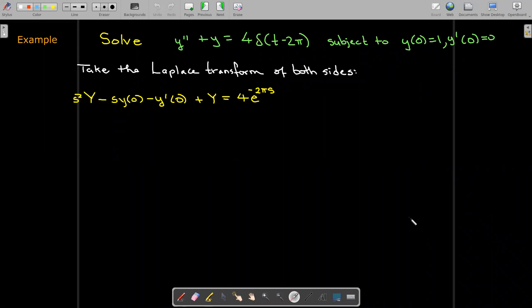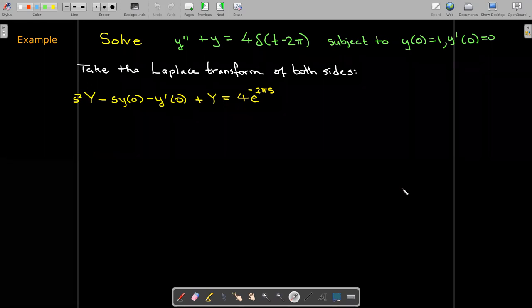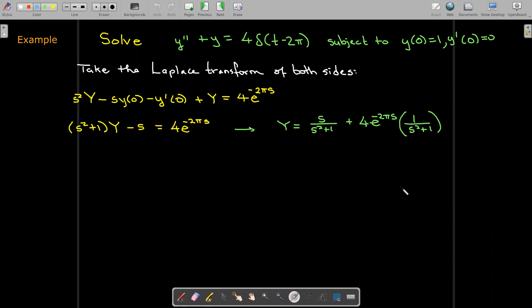And then we just learned the formula for the Dirac delta function. So if we're centered at 2π, I'll have e to the negative 2πs as the exponent, and then I have the 4 which comes from the definition of the problem. So let's put in our initial conditions and we'll solve that for uppercase Y.